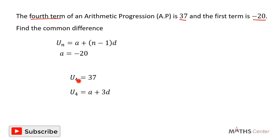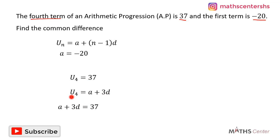We have U4 as 37 and the same U4 as A plus 3D, so we can equate them. This gives us A plus 3D is equal to 37. We have the value of A as negative 20, so we can substitute it to get the value of D, the common difference.